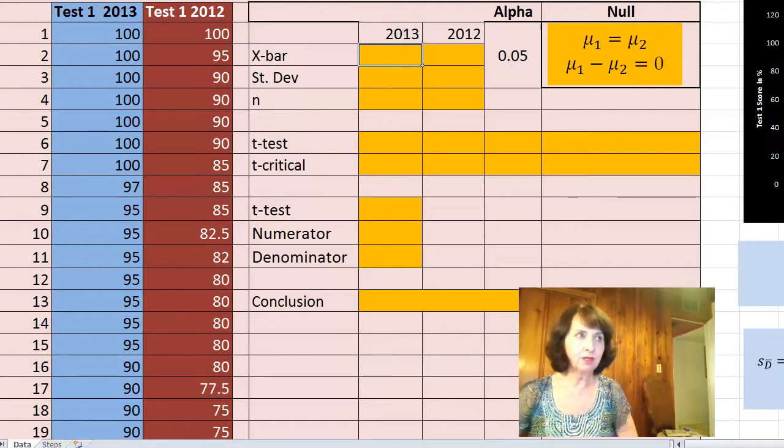My data for test one is recorded in the C column, and here is for the first test 2013 random sample.